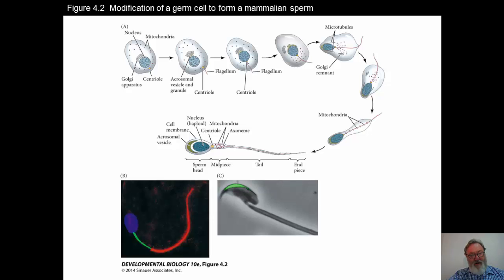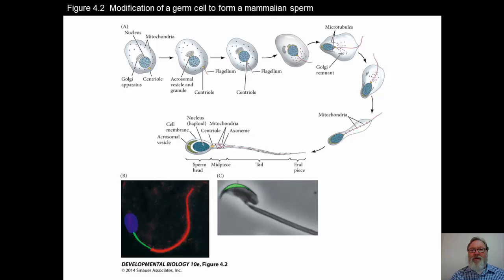Finally, there had to be an activation of the egg to start development. Let's look at the modification of the germ cell to form a mammalian sperm, as illustrated in the slide.